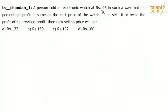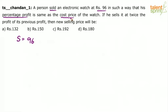A person sold an electronic watch at rupees 96 in such a way that his percentage profit is the same as the cost price of the watch. If he sells it at twice the profit of its previous profit, then the new selling price will be? So the selling price is rupees 96, and it was sold such that the percentage profit is same as the cost price.